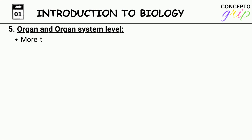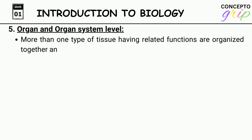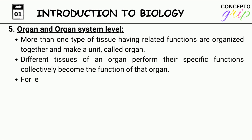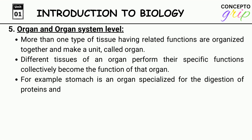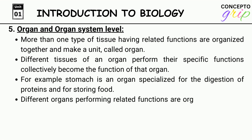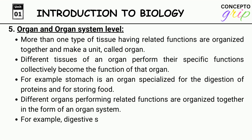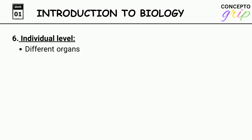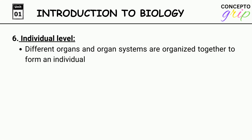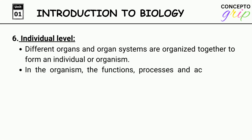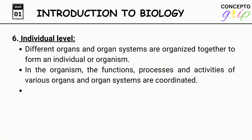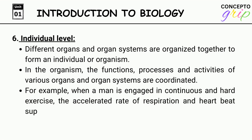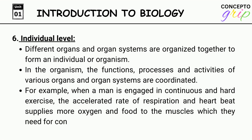Level 5 — Organ and organ system level. More than one type of tissue having related functions are organized together to make a unit called an organ. Different tissues of an organ perform their specific functions collectively, which become the function of that organ. For example, the stomach is an organ specialized for the digestion of proteins and for storing food. Different organs performing related functions are organized together in the form of an organ system. For example, the digestive system is an organ system that carries out the process of digestion. Level 6 — Individual level. Different organs and organ systems are organized together to form an individual or organism. The functions, processes, and activities of various organs and organ systems are coordinated. For example, when a man is engaged in continuous and hard exercise, the accelerated rate of respiration and heartbeat supplies more oxygen and food to the muscles which they need for continuous work.